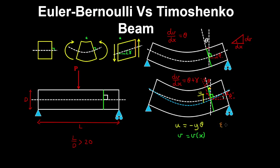And now we can calculate the bending strain, which is equal to the first derivative of u with respect to x. So that would be minus y d theta dx. And the tensor strain epsilon xy is one half times du dy plus dv dx.